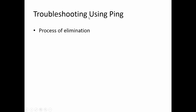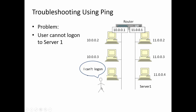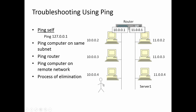Let's look at troubleshooting using ping — how we can use a process of elimination to determine where a problem is located. If a user can't log in to a server, we need to figure out: is it the workstation, the router, the server, or something in between? We go to the workstation and first ping ourselves by typing ping 127.0.0.1, called a local loopback or self-test. If you can't ping yourself, there's something wrong with TCP/IP on that workstation. If you can, the next step is to ping your nearest neighbor.